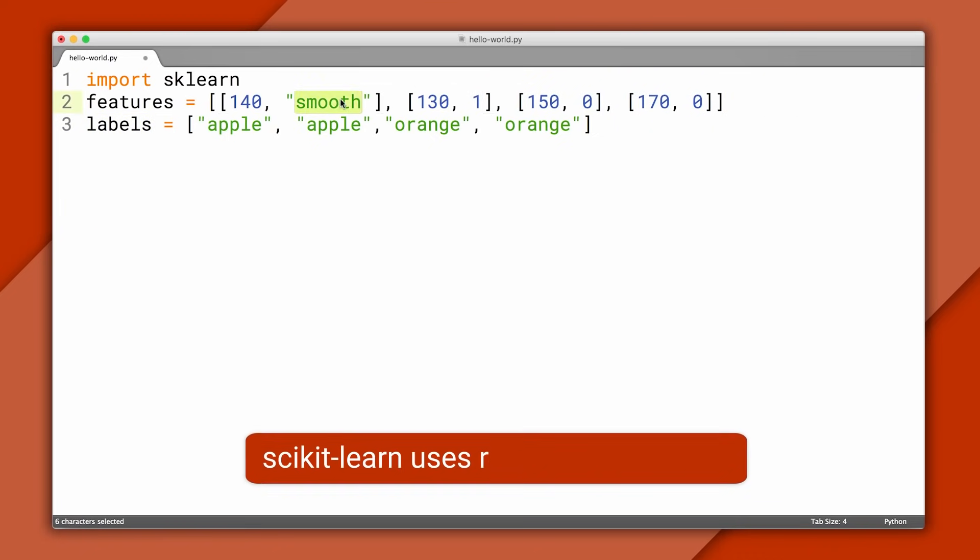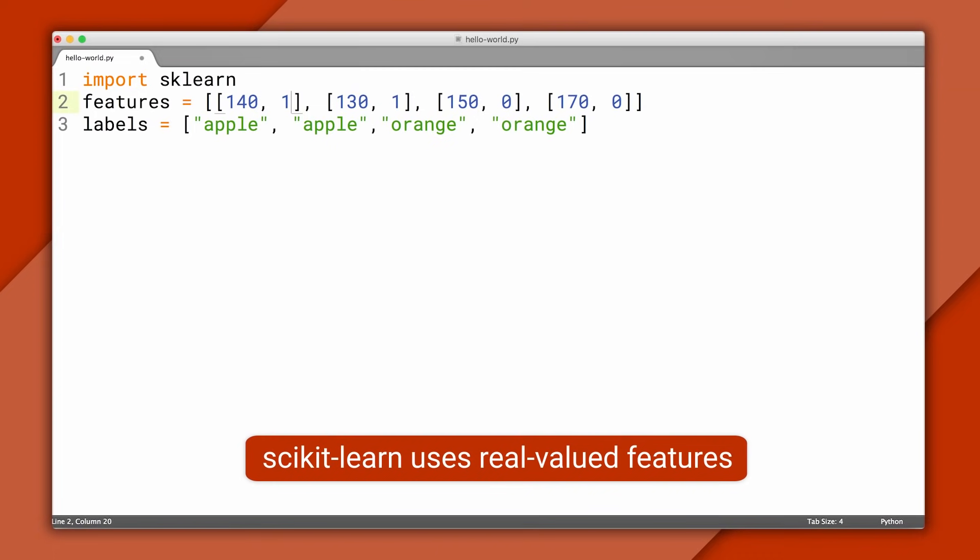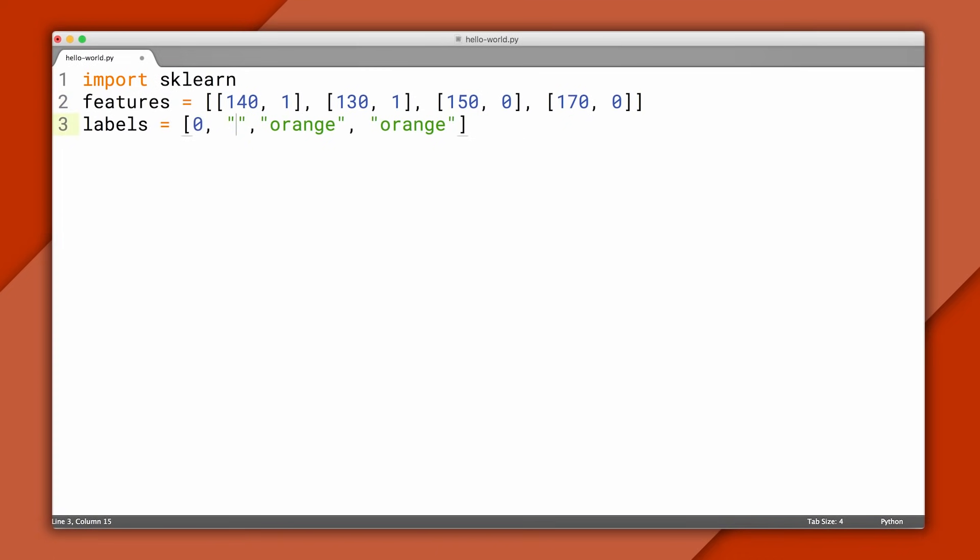I'm going to change the variable type of all our features to ints, instead of strings. So I'll use zero for bumpy and one for smooth. I'll do the same for our labels, so I'll use zero for apple and one for orange. These are lines two and three in our program.